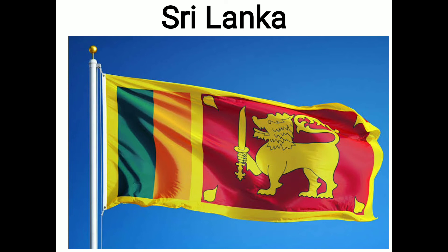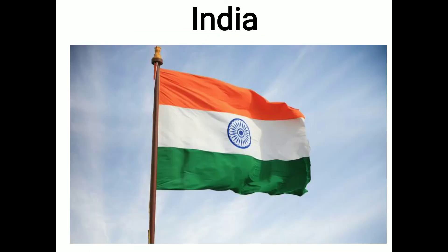The curly hair of the lion represents meditation, religious observance, and wisdom. Number 5 is the flag of our country, India. The national flag of India is a horizontal rectangular tri-color of saffron, white, and green, with the Ashoka Chakra — a 24-spoke wheel — in navy blue at its center.